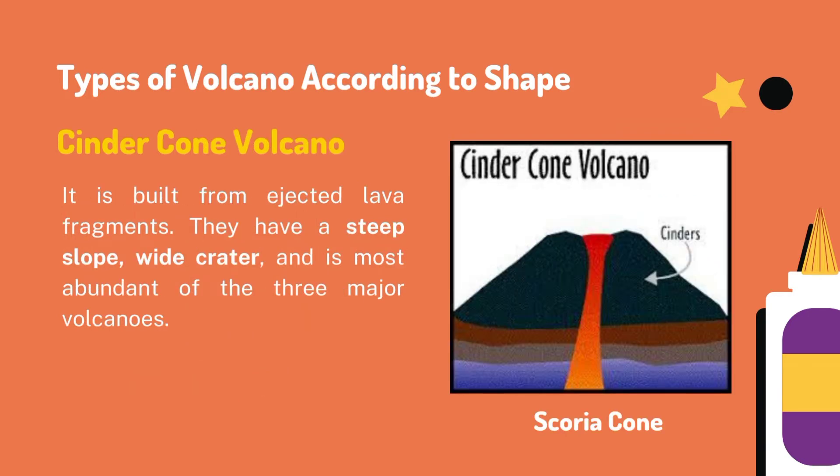The second type is what we call cinder cone volcano. It is built from ejected lava fragments. They have a steep slope, wide crater, and it is the most abundant of the three major volcano types.